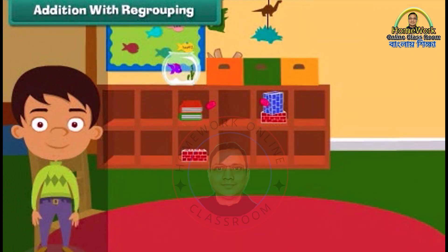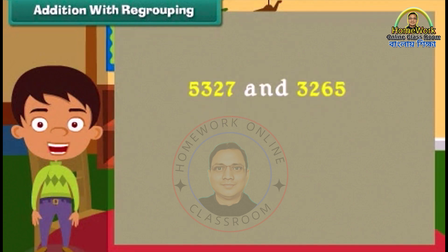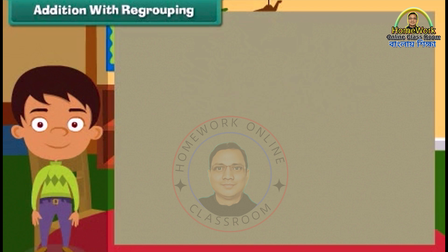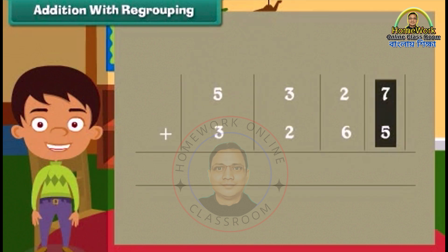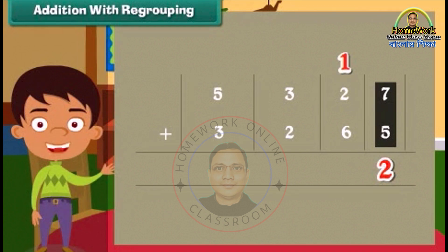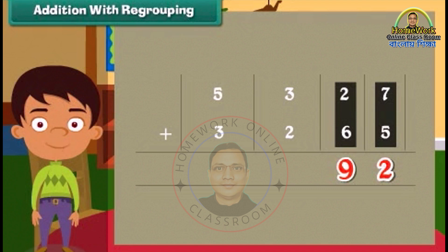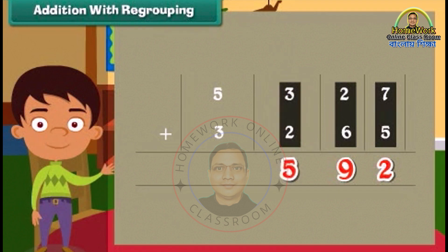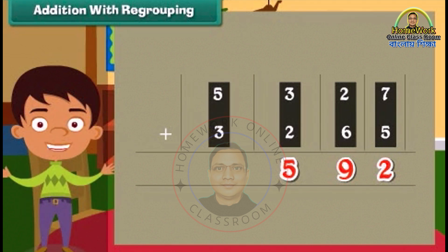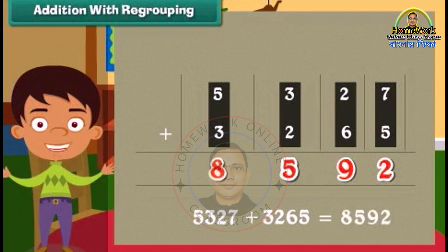Addition with regrouping. Let's try the addition of 5327 and 3265. We start by adding values at the ones place: 7 plus 5 is equal to 12. Write 2 below in the ones column and write 1 above in the tens column. Next we move to add the tens: 2 plus 6 plus 1 is equal to 9. Write 9 below in the tens column. Now we add hundreds: 3 plus 2 is 5. Write 5 below in the hundreds column. Similarly, add thousands — we get 8. Therefore, 5327 plus 3265 is equal to 8592.